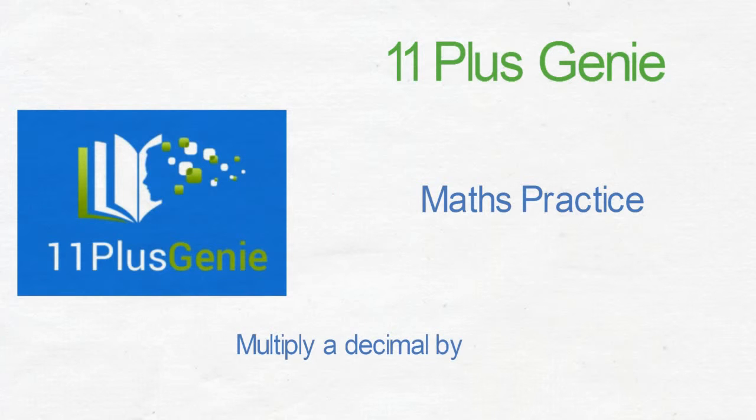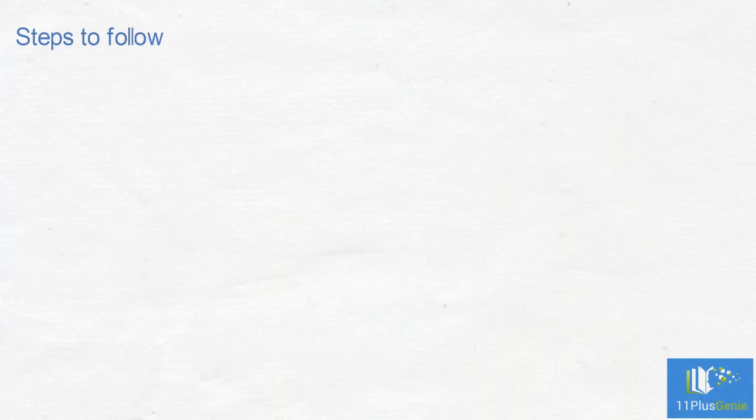Multiply a decimal by another decimal. Steps to follow when multiplying a decimal by another decimal.